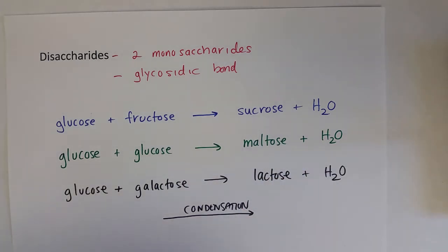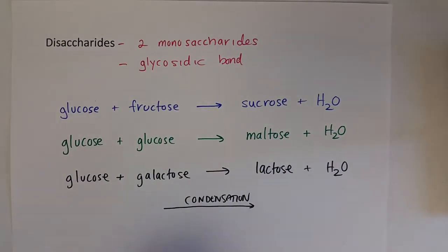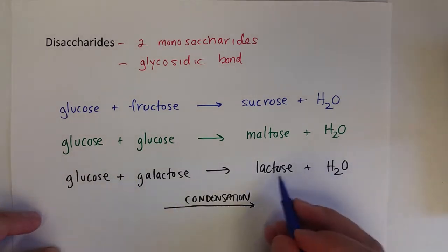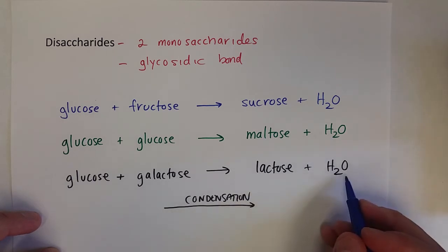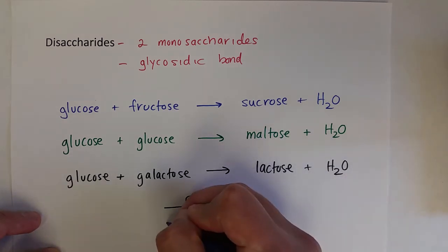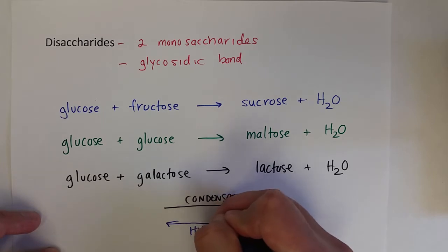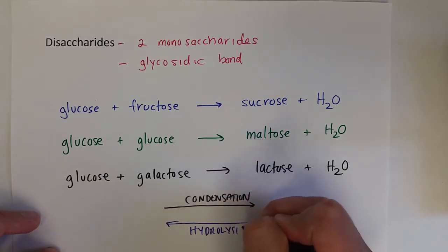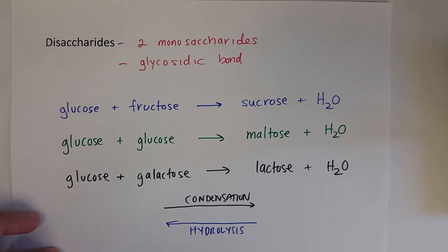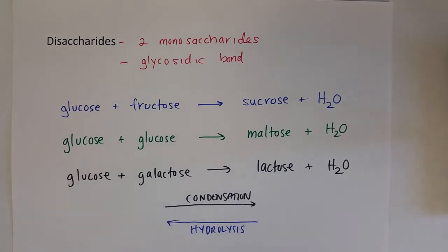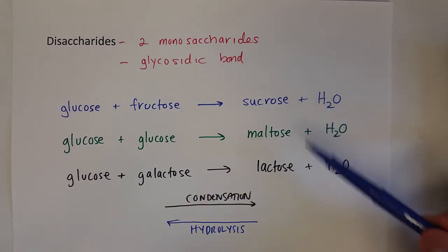Basically you're condensing smaller carbohydrates to form bigger disaccharides or polysaccharides. If the reverse occurs — say lactose combines with water to break that glycosidic bond — that is called a hydrolysis reaction, and this can occur for polysaccharides as well.